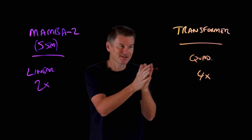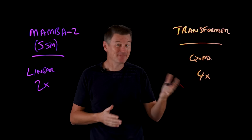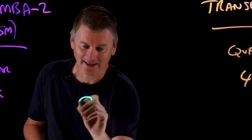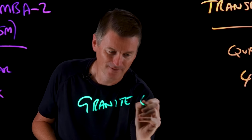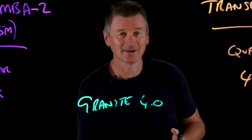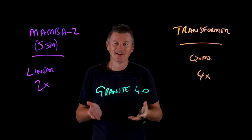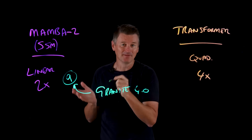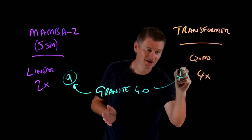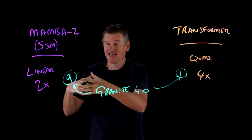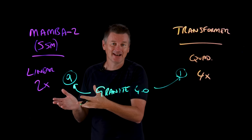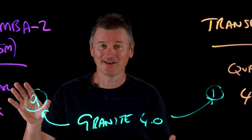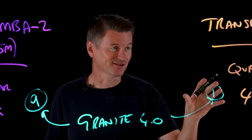So how does this all relate to Granite 4.0? The Granite 4.0 architecture is a hybrid architecture. It uses nine Mamba blocks for every one Transformer block. Mamba does the heavy lifting of capturing global context, then the Transformer blocks work their magic on parsing nuanced local details — combining the efficiency of Mamba with the precision of Transformers.